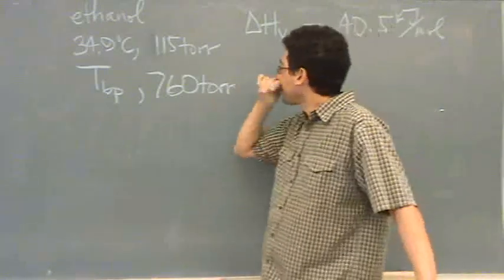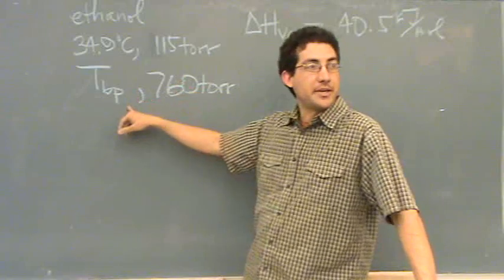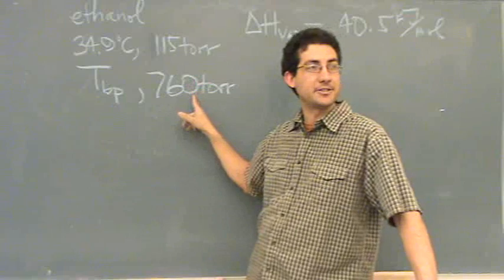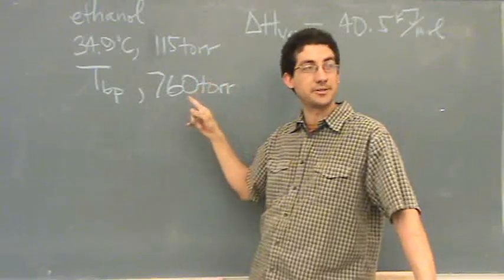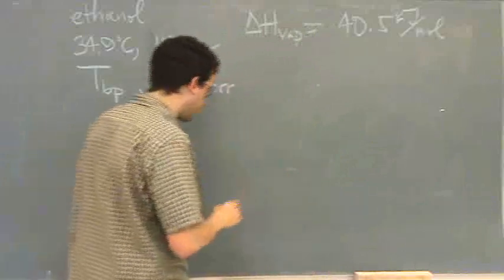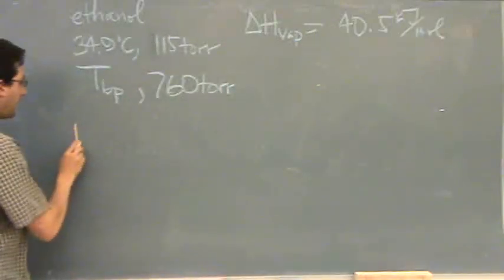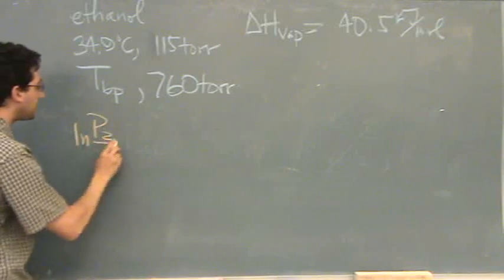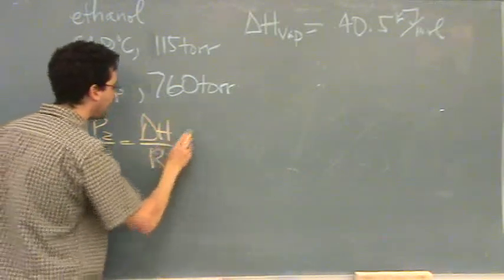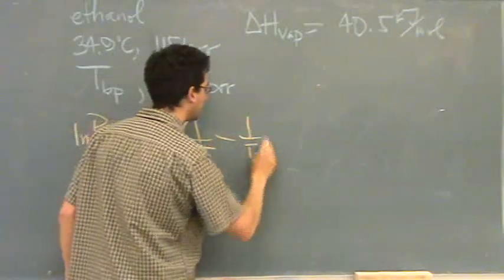The other thing is, anytime it says boiling point, they're unconsciously telling you the pressure. So you always want to assume they're giving you the pressure when you see the word boiling point. Let's set up the Clausius-Clapeyron equation: natural log of P2 over P1 equals delta H over R, times 1 over T1 minus 1 over T2.